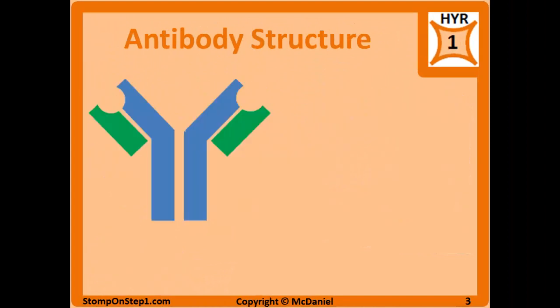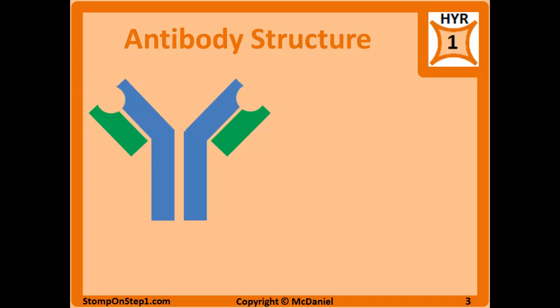Antibody has a Y shape. The tips of the Y can bind two different antigens while the stem is what interacts with the other immunologic processes we just talked about. Antibody is made up of two heavy chains and two light chains — in this diagram the heavy chains are shown in blue and the light chains in green. Antibody is broken down into two main regions: the constant region and the variable region.